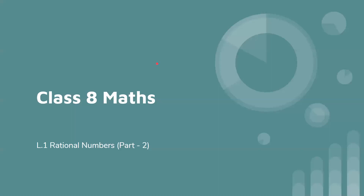Hello friends, I am Mary Miss from SEM School. Today I am going to teach Class 8 Maths Lesson No. 1, Rational Numbers Part 2. In the previous video, you had learned about two properties: Closure Property and Commutative Property. Today we are going to learn the third property, that is Associativity.